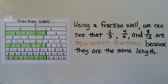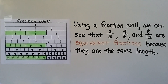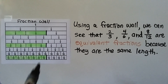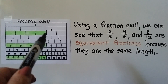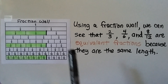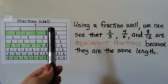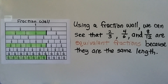Using a fraction wall, we can see that two-thirds, four-sixths, and eight-twelfths are equivalent fractions because they are the same length. They are each the same length. If I put my marker up like this, you can see they all end at the same place. So the fraction wall shows us that they're equivalent fractions.